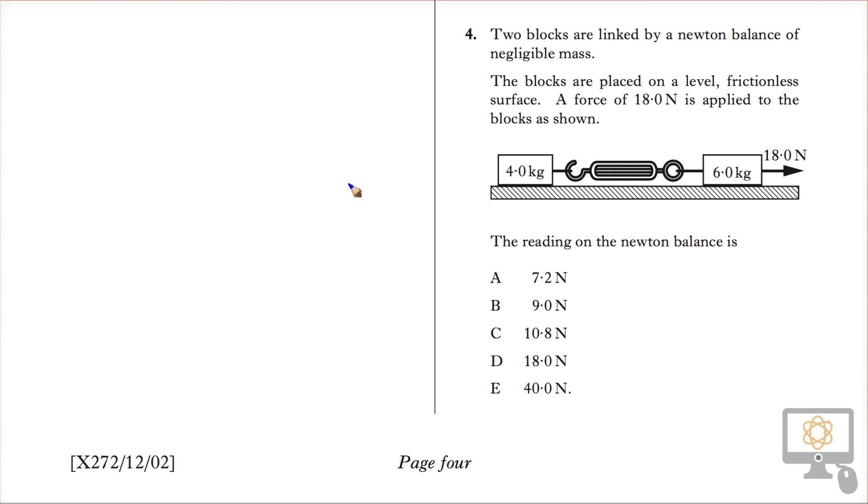We'll look at question number four from the 2013 Revised Tier Physics paper. It says that two blocks are linked by a Newton balance of negligible mass. The blocks are on a frictionless level surface, and a force of 18 Newtons is applied to the blocks as shown. The reading on the Newton balance is.